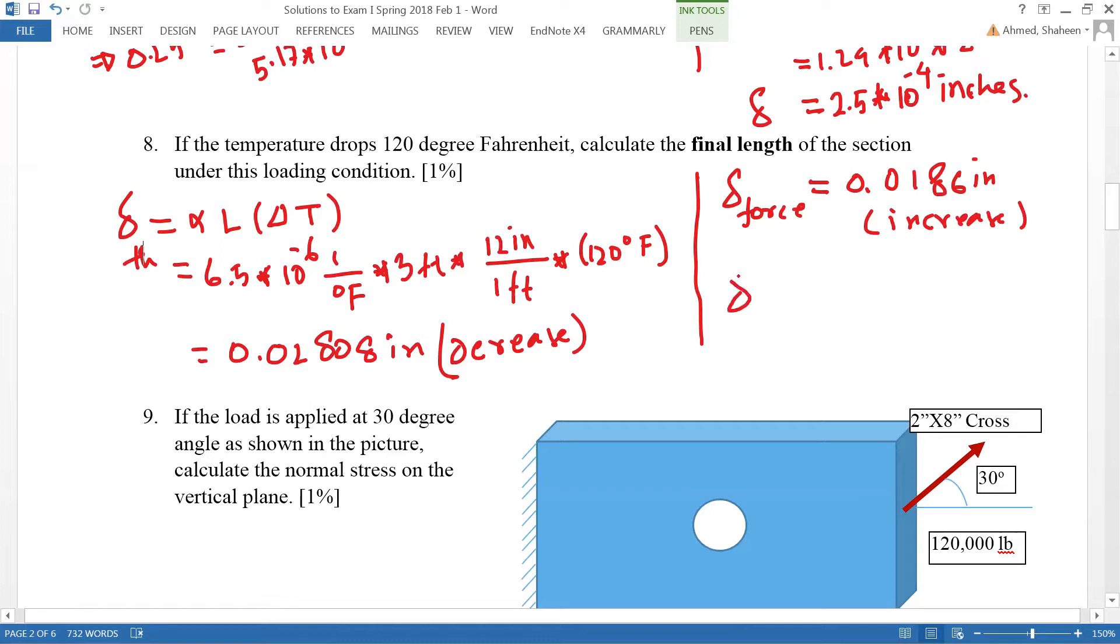The change in dimension or deformation, change in length, can be calculated by—looks like the thermal change is bigger, so we're going to do this minus this. So this will be a decrease. This was calculated as 0.00948 inches, so the final length would be L equals...